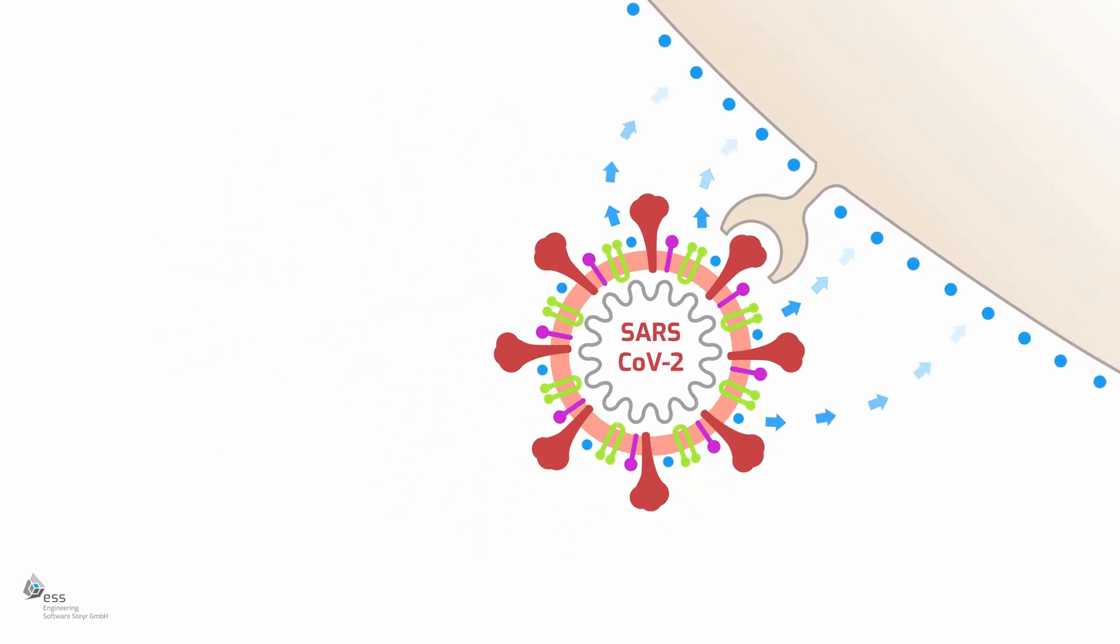The virus attaches itself to the membrane of the cells inside our lungs using these S proteins, and then starts communicating with the help of their glycoproteins. Since the coating on these host cells are also glycoproteins, the virus goes undetected by our immune system.